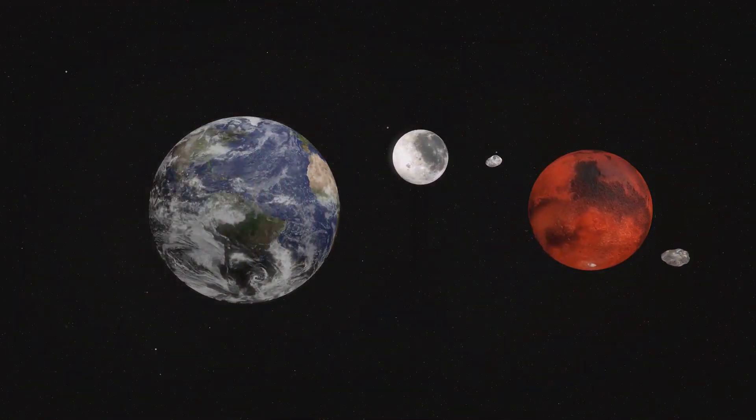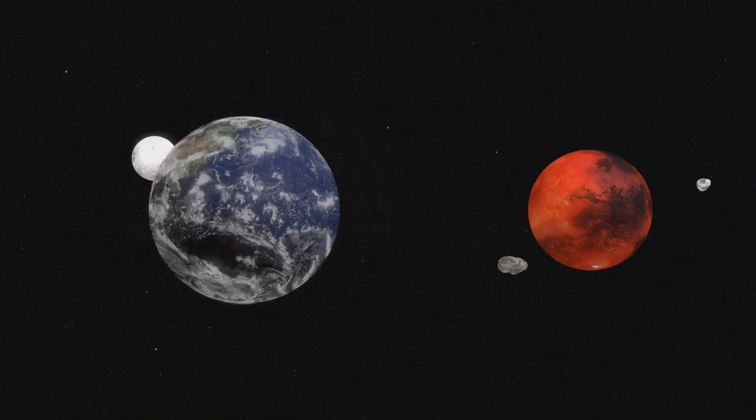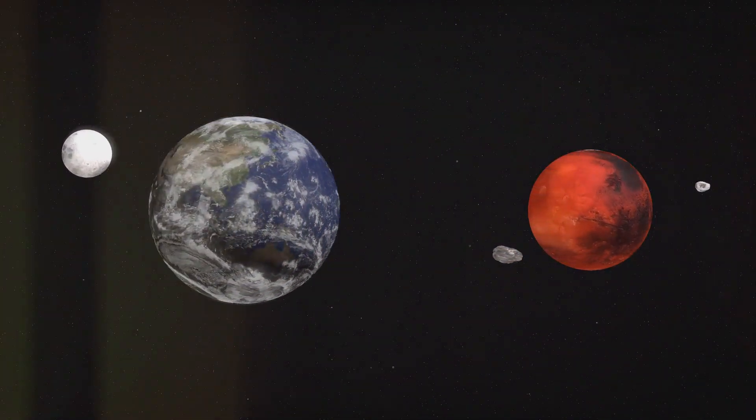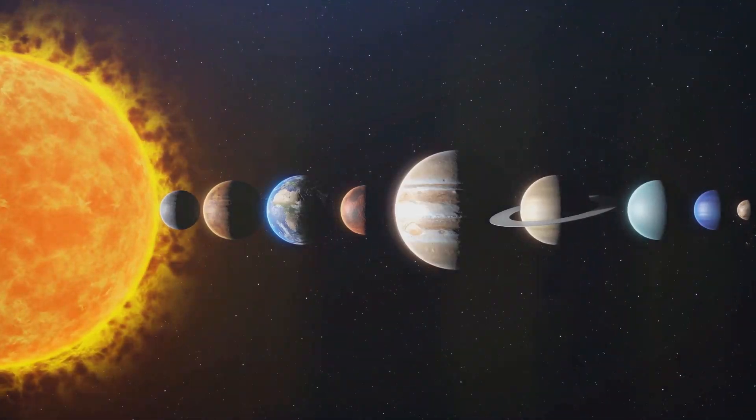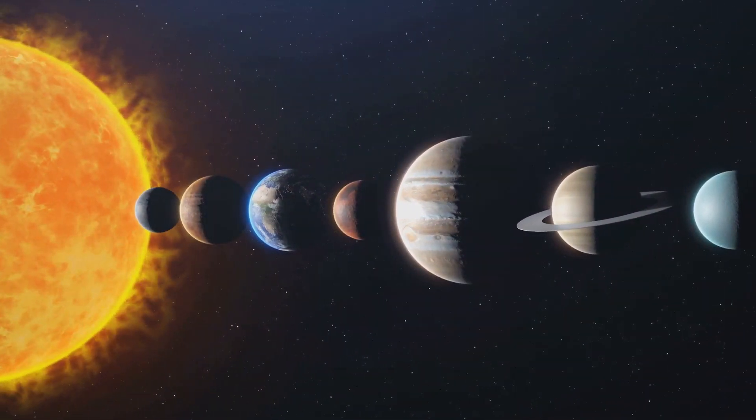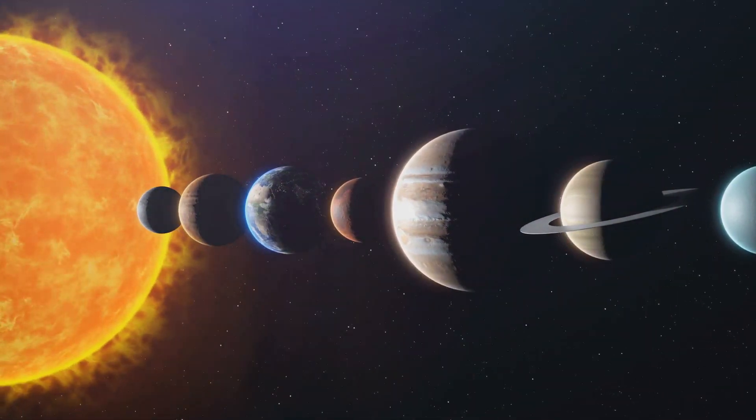Mars symbolizes Earth in the future, destroyed by a colossal impact, while Venus reflects our ancient past. Central to this theory is the idea that every billion years, the Sun ejects a substantial clump of iron-rich plasma, which forms the iron core that breathes life into Earth.